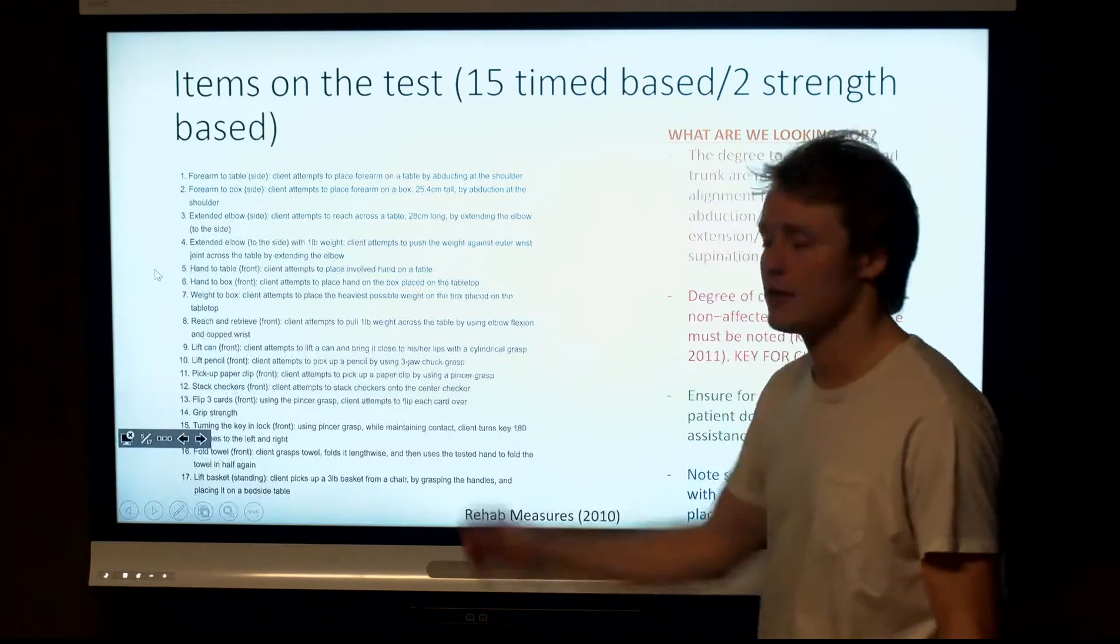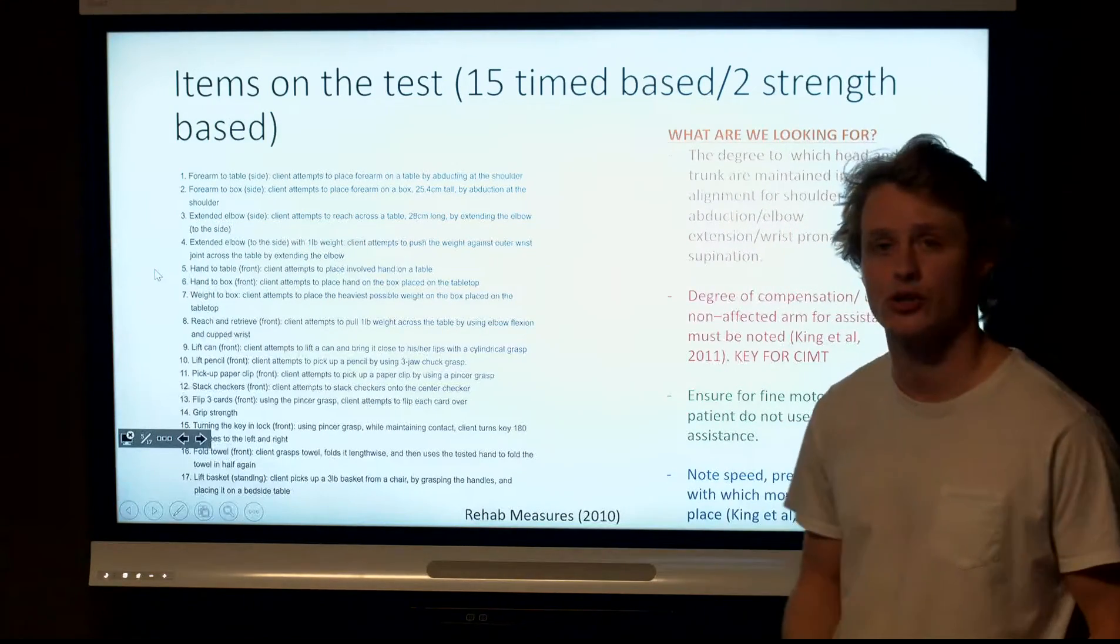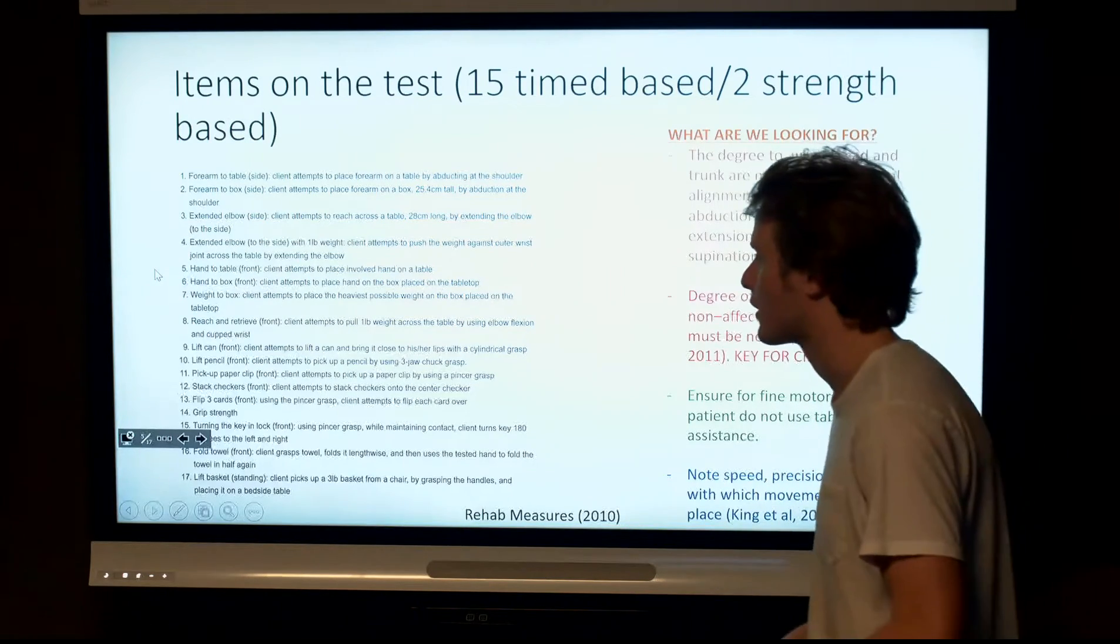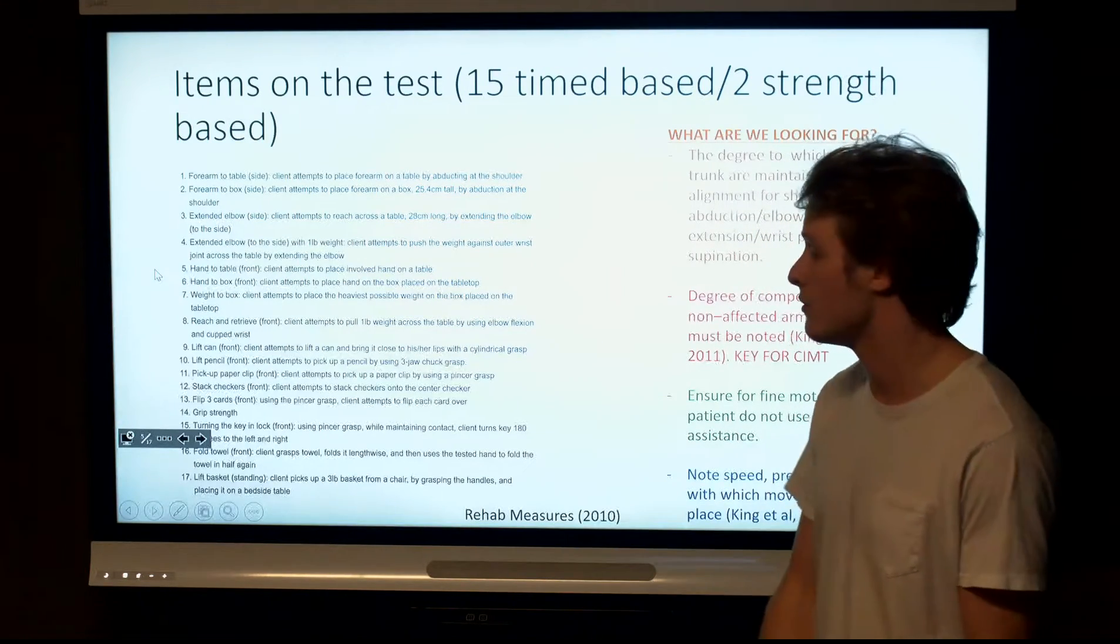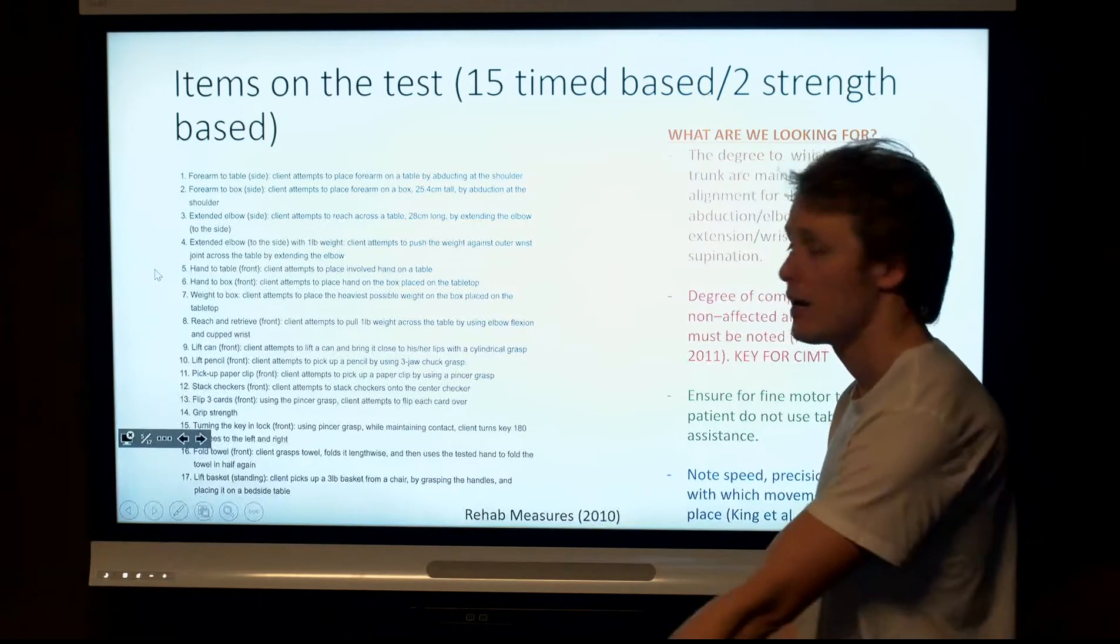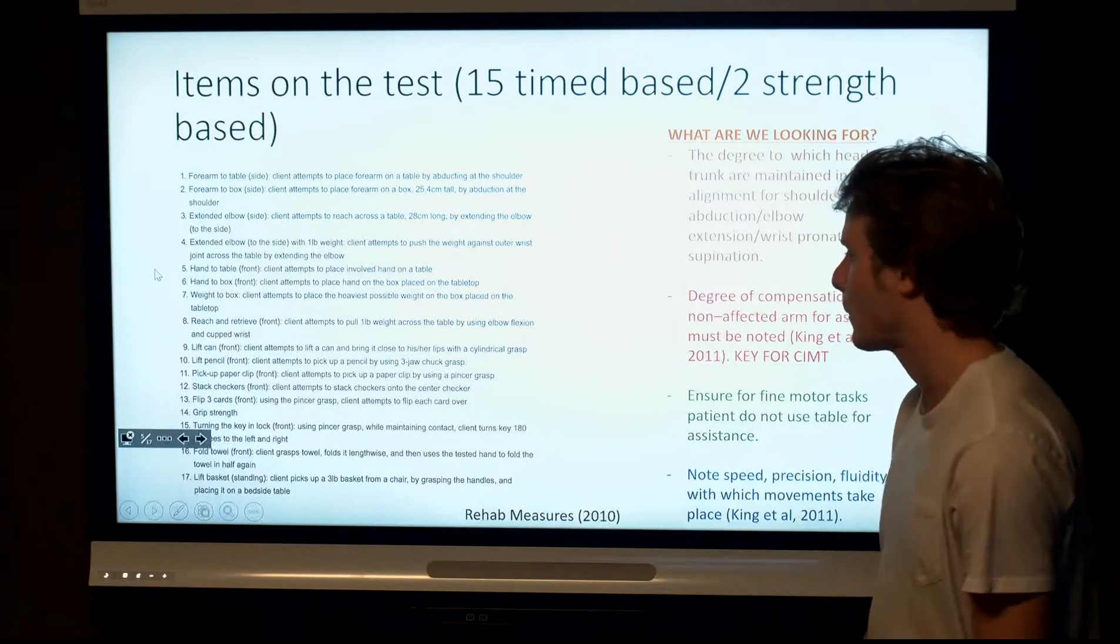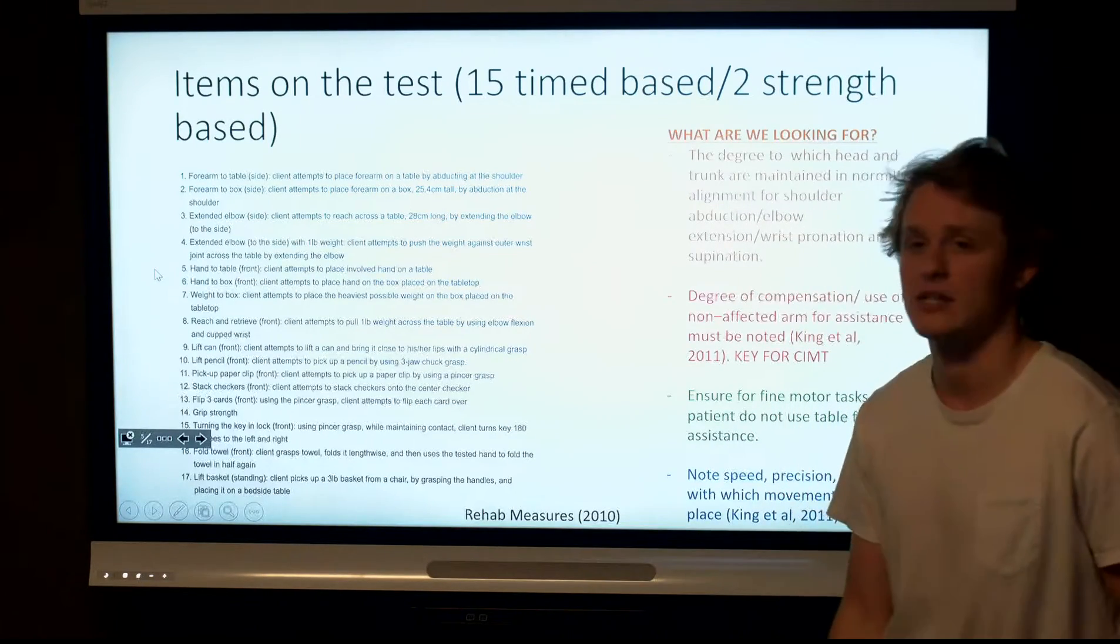This is what the 17 items of the test look like. As I mentioned, it begins from quite simple shoulder abduction onto the table and onto the box that I showed you, to more complex things using weights, to shoulder extension and flexion, pulling weights, to cupping and drinking from a can to test shoulder flexion and extension, to more fine motor movements like lifting a pencil and picking up a paper clip.